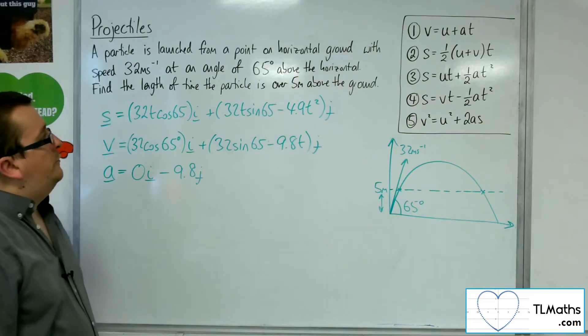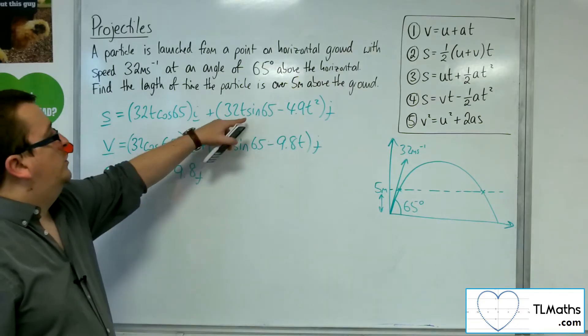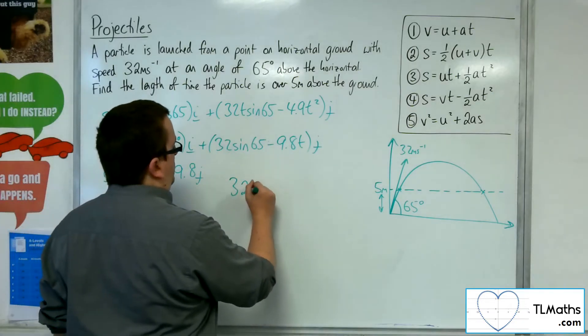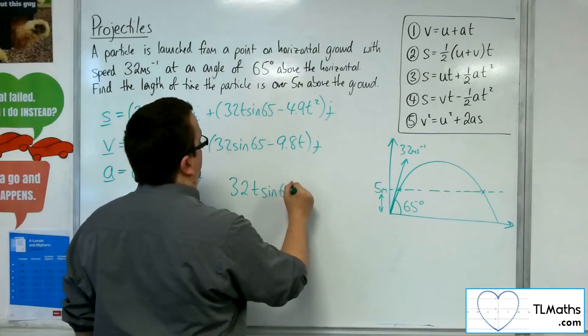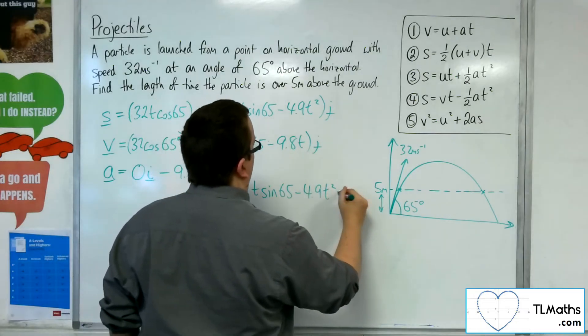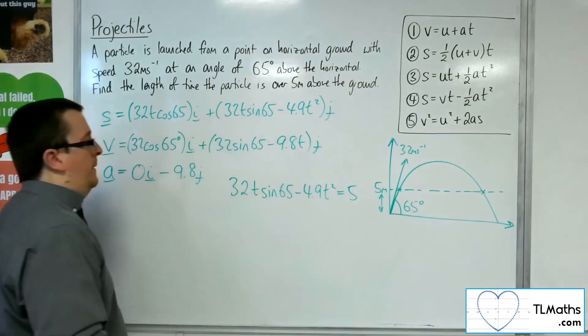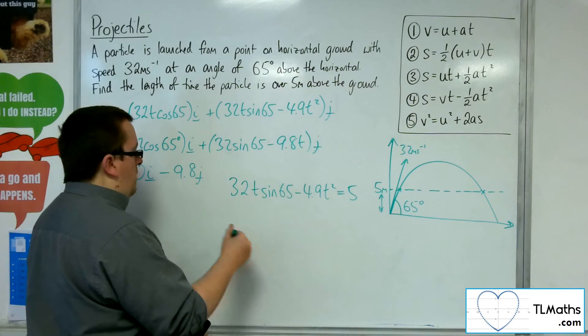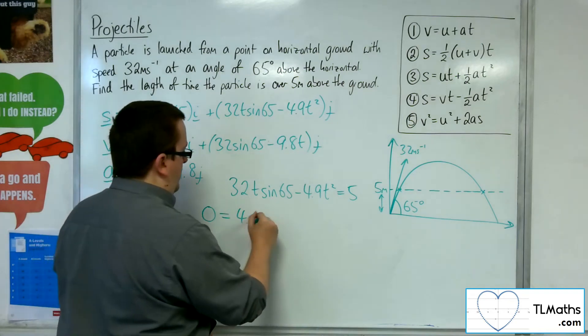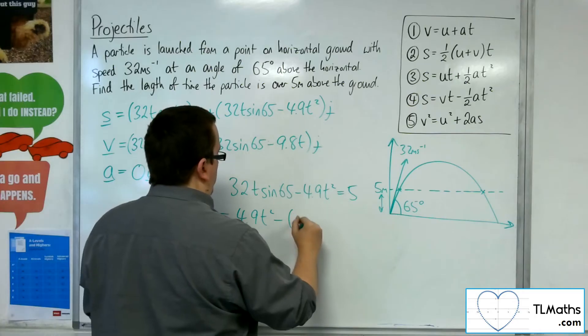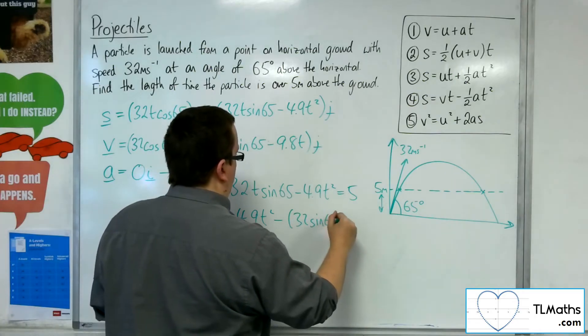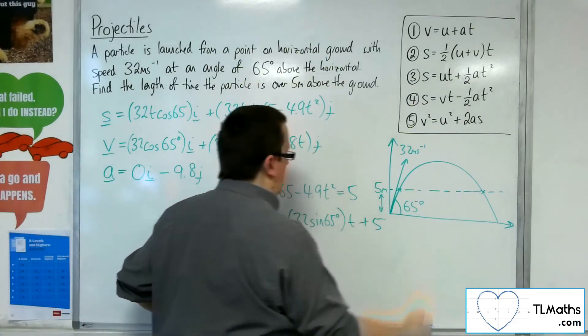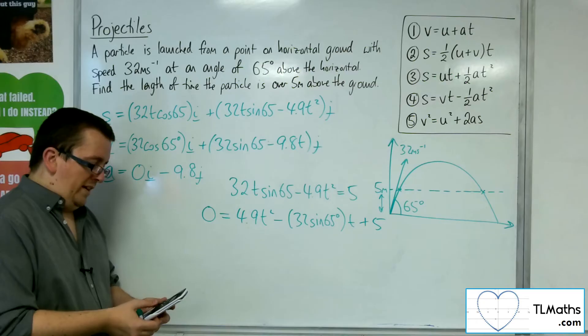So find the length of time the particle is over 5 metres above the ground. I want the vertical displacement to be 5 metres, so I'm going to put 32t sine 65, take away 4.9t squared, equal to 5. So if I rearrange this, I'm going to move everything onto the right-hand side. So 0 equals 4.9t squared, take away 32 sine 65t, and then I've got that plus 5 as well. So now I'm going to put this into my quadratic solver.